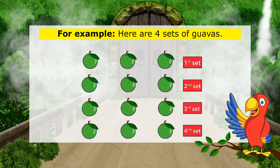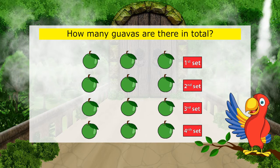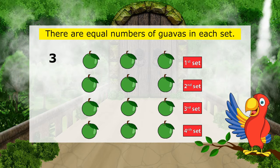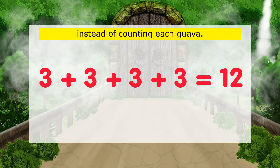For example, here are four sets of Boivahs. Each set has three Boivahs. How many Boivahs are there in total? You can see there are equal numbers of Boivahs in each set. So we can simply add instead of counting each Boivah. 3 plus 3 plus 3 plus 3 equals 12.